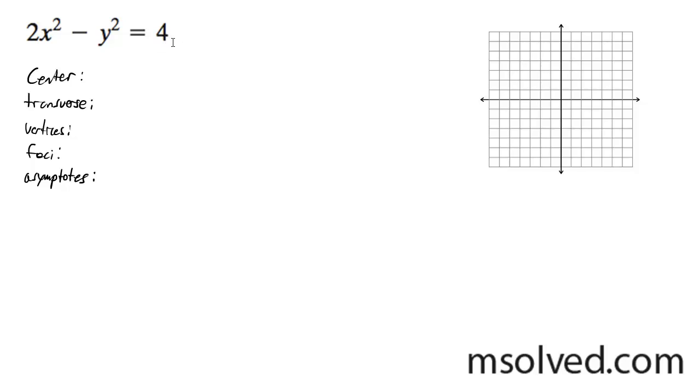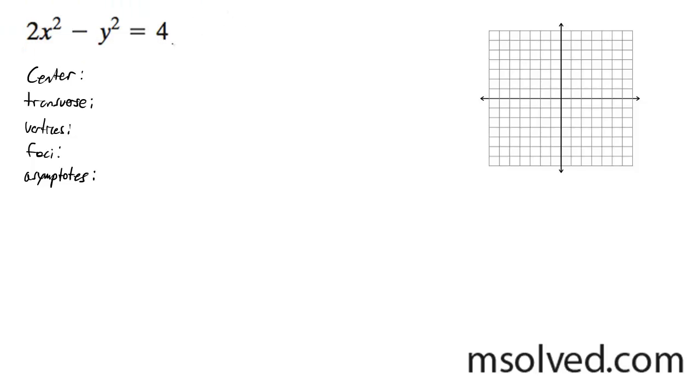You want to find the information listed below for this hyperbola. First off, what we need to do is divide by 4. We're going to get x squared over 2 minus y squared over 4 equals 1.